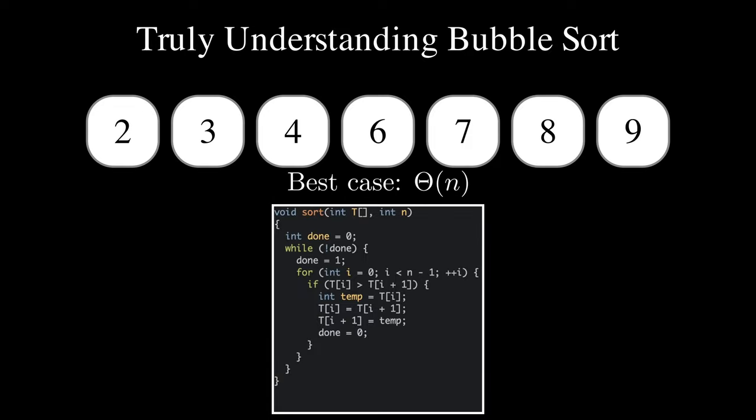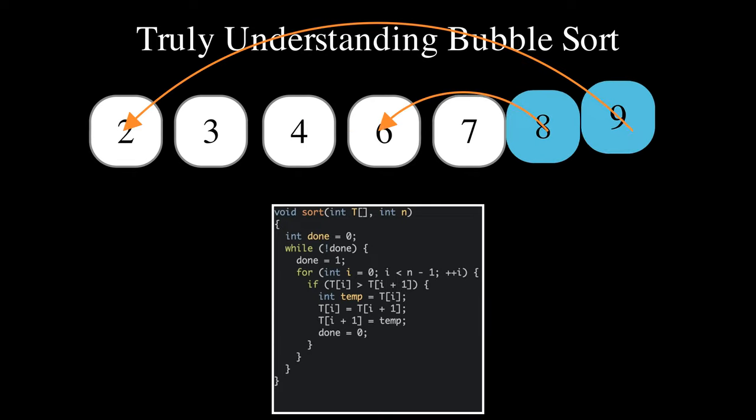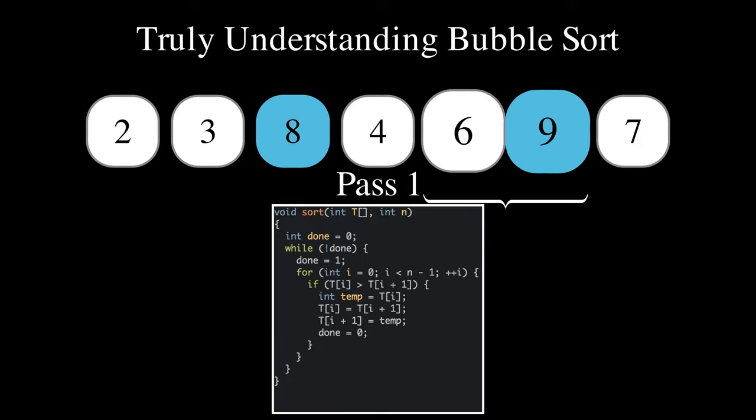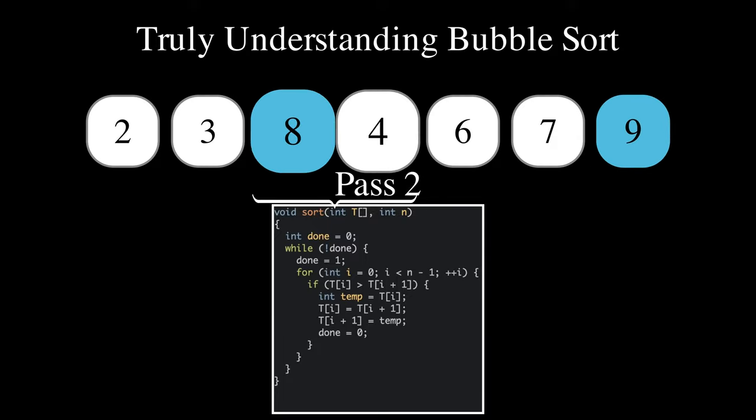This best case time complexity of theta of n is also achieved when a few elements at the end of the sorted array are displaced and moved forward by any amount. In this case, we require as many passes as there are elements displaced in order to bring back the displaced elements to their place, plus one more pass to check that the array is indeed sorted.